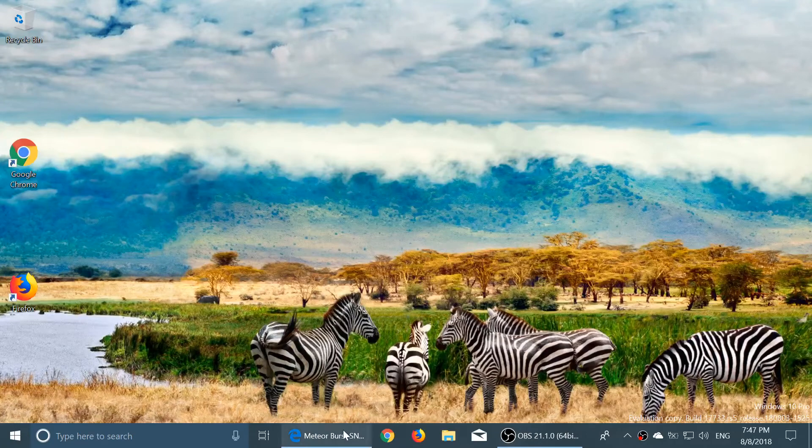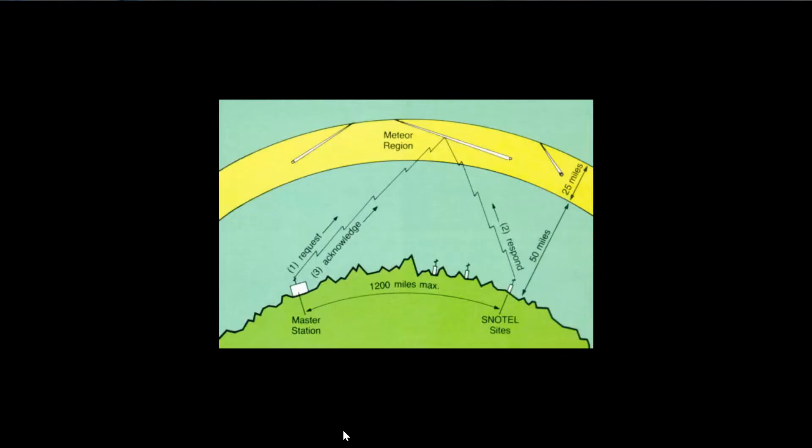Welcome to the VHF UHF channel. I wanted to talk a little bit today about meteor scatter. Meteor scatter is one of the numerous different ways that amateur radio operators can sometimes make long-distance contacts on the VHF range.